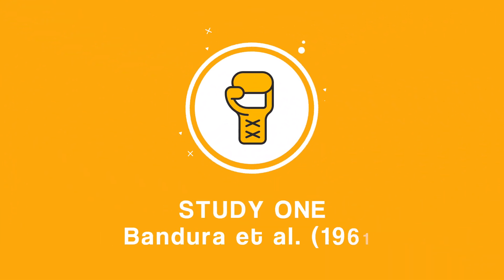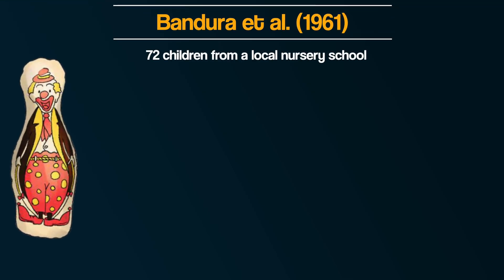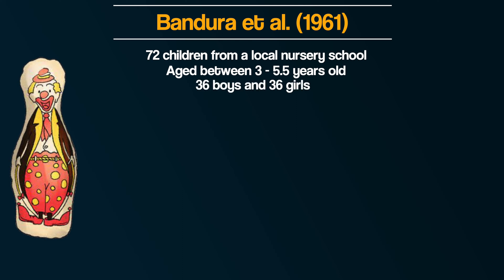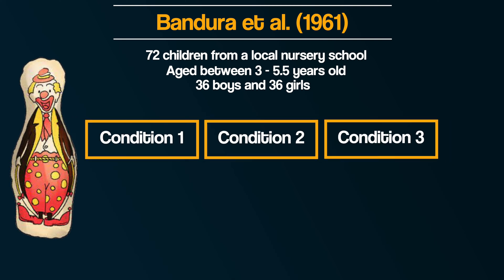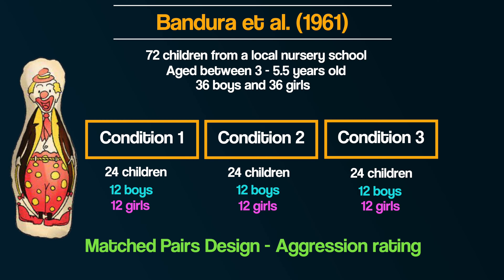The Bobo Doll was an inflatable clown that was weighted at the bottom so that when it was hit, it would return upright. The first original study was conducted in 1961. 72 children from a local nursery school were involved, aged approximately between three and five and a half years old — 36 boys and 36 girls. These 72 children were divided into three groups of 24, evenly split with 12 boys and 12 girls in each. It was a matched pairs design, as each child was rated by their nursery teacher in terms of how aggressive their behavior typically was and then matched with a child of similar aggression.